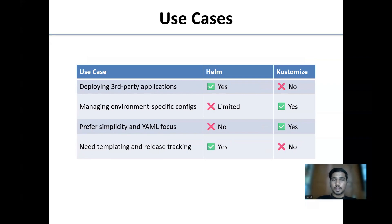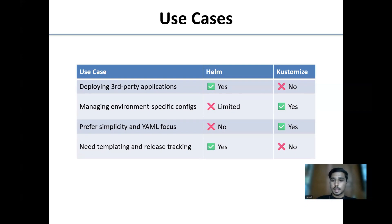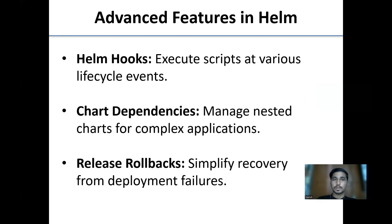Use cases comparison: Helm can deploy third-party applications but Kustomize cannot. Kustomize can manage environment-specific configurations but Helm cannot. Kustomize is preferred for simplicity and YAML focus, while Helm is preferred when templating and release tracking are needed.